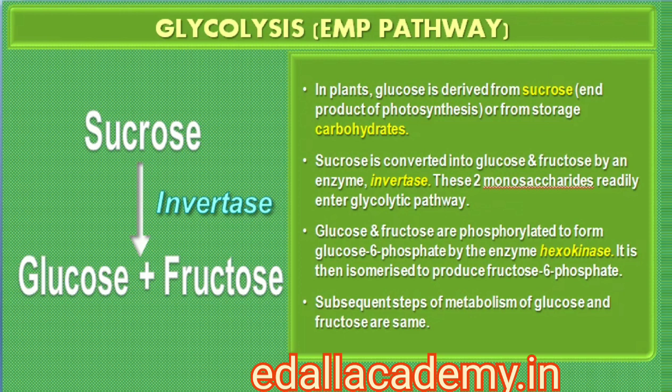In plants, this glucose is derived from sucrose, which is the end product of photosynthesis, or from storage carbohydrates. Sucrose is converted into glucose and fructose by the enzyme invertase, and these two monosaccharides readily enter the glycolytic pathway. Glucose and fructose are phosphorylated to give rise to glucose 6-phosphate by the activity of the enzyme hexokinase. This phosphorylated form of glucose then isomerizes to produce fructose 6-phosphate. Subsequent steps of metabolism of glucose and fructose are the same.